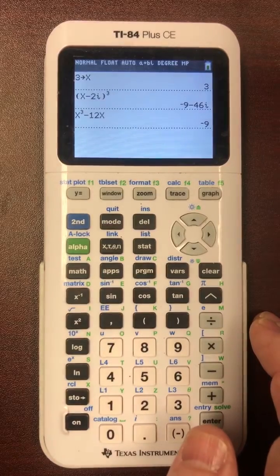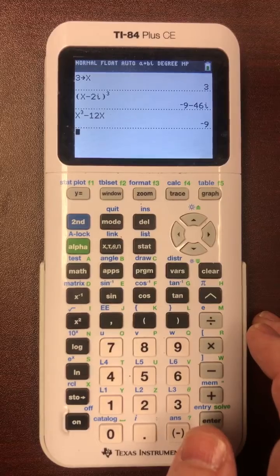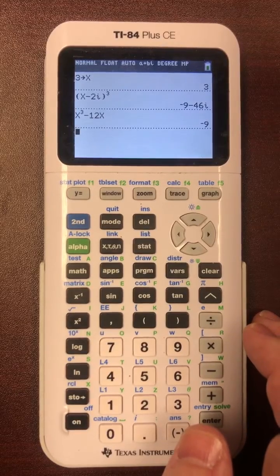That means we can cross off any of the answers, c and d and e, that do not have x cubed minus 12x. So we're already down to a and b off the bat.